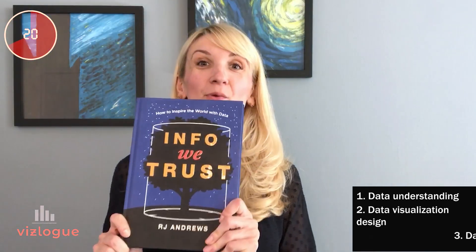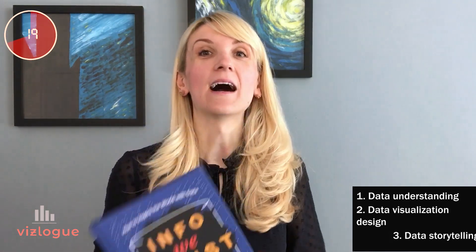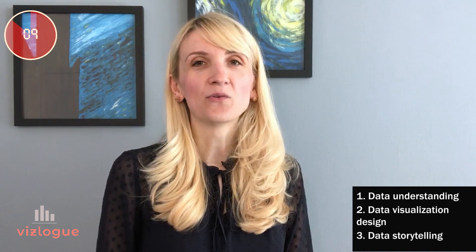Book number three: Info with Trust by RJ Andrews. This book covers data storytelling. It convinces the reader that data is beautiful, and by doing that, it incorporates knowledge from philosophy, history, and psychology. And by the way, the illustrations are amazing.